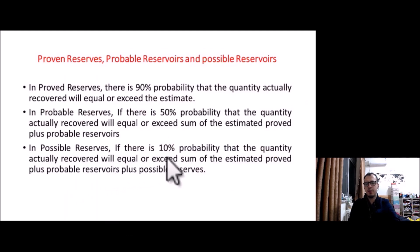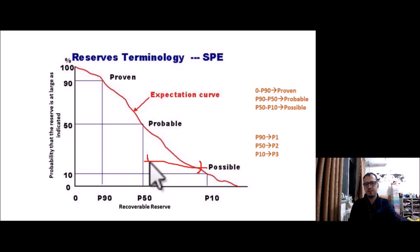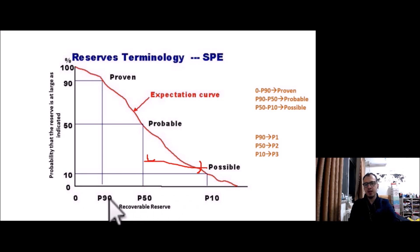For possible reserves, there is a 10% probability that the quantity actually recovered will equal or exceed the sum of proved plus probable plus possible. We know proved and probable, so possible spans from P50 to P10. To recap: 0 to P90 is proved, P90 to P50 is probable, and P50 to P10 is possible. P90 can also be called P1, P50 is P2, and P10 is P3.